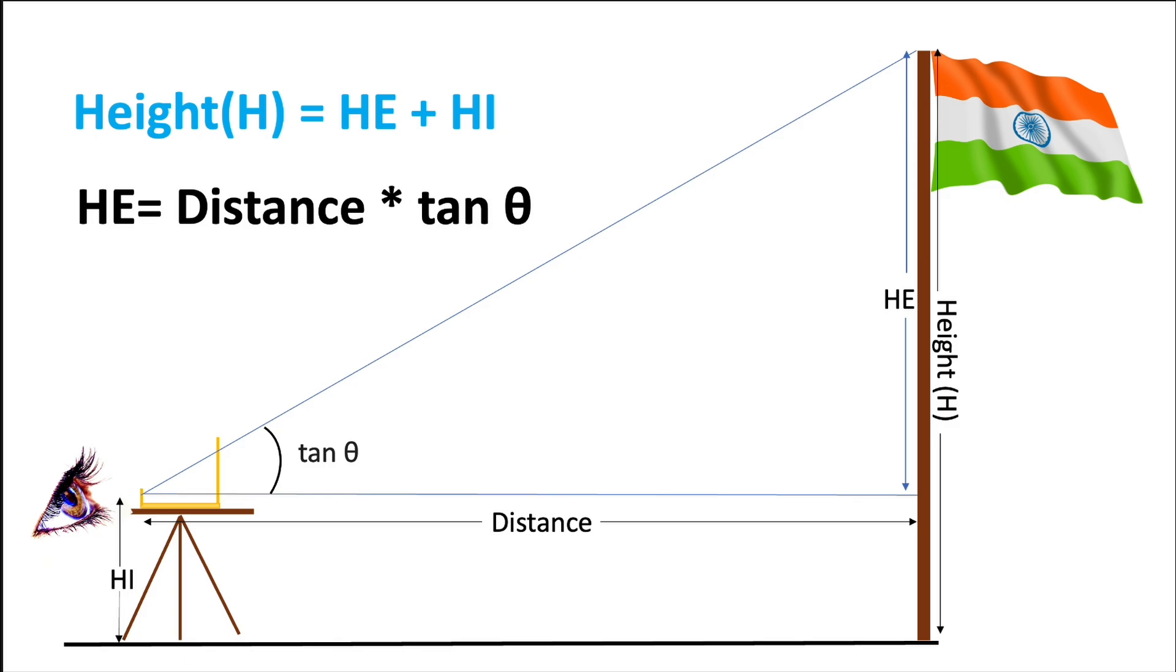So the final height of the pole h equals he plus hi. Adding he and hi gives us the final height of the object.